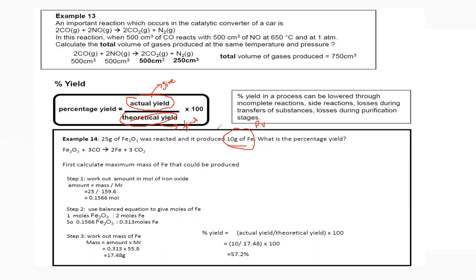To find the theoretical yield, we convert mass into moles. 25 grams of iron oxide divided by its molar mass of 159.6 gives 0.1566 moles of iron oxide. Then we use the mole ratio from the equation: iron oxide to iron is 1:2.